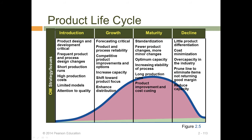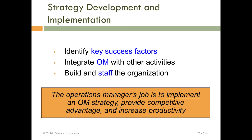Strategy can be a combination or a sequence of approaches depending on the product life cycle. One strategy is to use a third party to help produce. However, a strategy is only as good as its implementation — it is important to account for key success factors, integrate operations management with other activities, and build and staff the right organization.